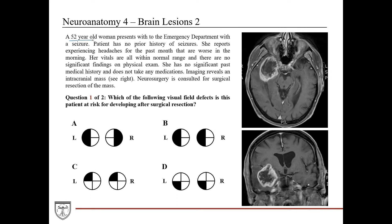We have a 52-year-old woman that presents to the emergency department with a seizure. She has no prior history of seizures, which is really important because epilepsy is typically diagnosed in younger patient populations. When you have a middle-aged or older patient presenting with a new onset seizure, you definitely want to be thinking about an intracranial mass — such as a tumor, an abscess, or a bleed.